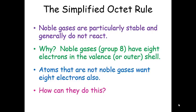And why is that? Well, basically it's because they have 8 electrons in their valence or outer shell. Now for helium, that's only 2 electrons, but it's the only one. But noble gases generally have 8 electrons in the valence shell, and that makes them particularly stable.